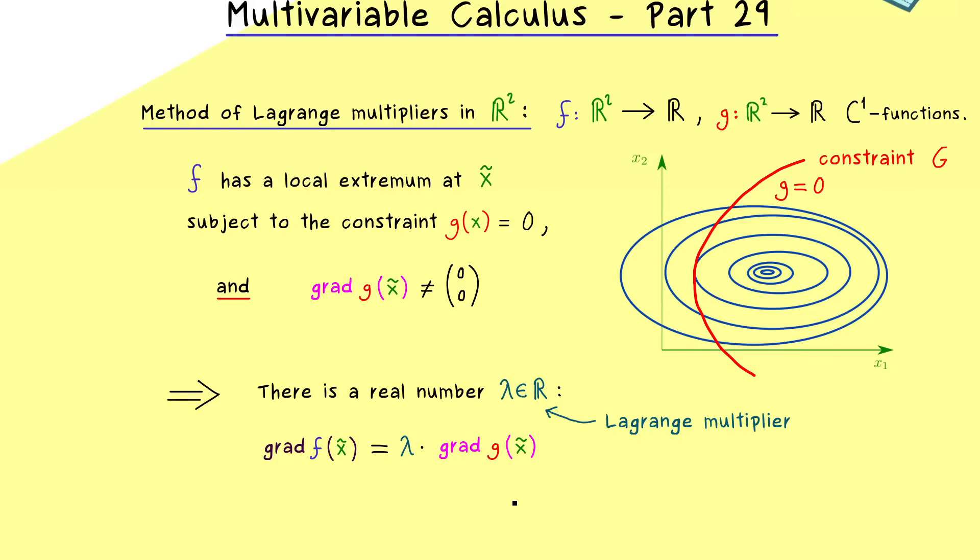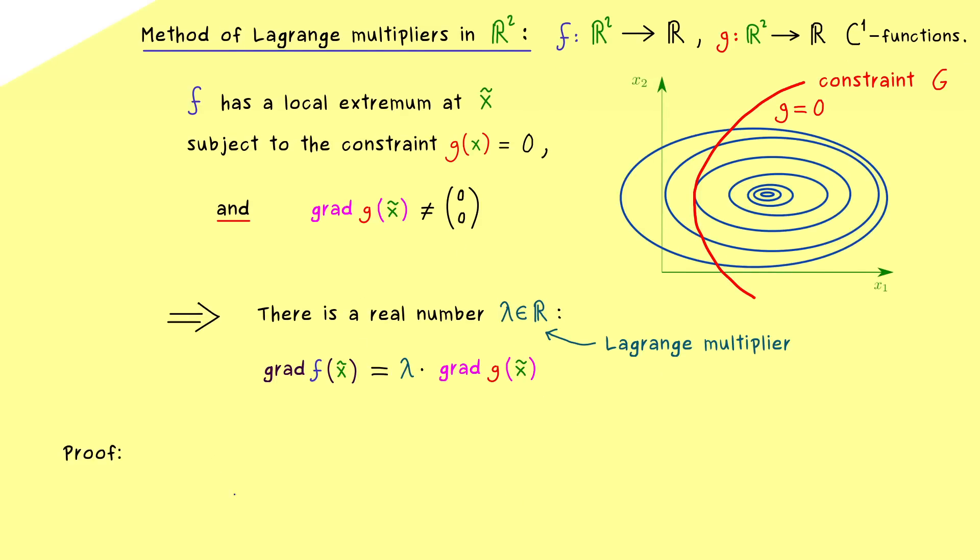Hence at this point x tilde we find a real number λ which we call the Lagrange multiplier. Then the only difference between the two gradients is this scalar λ. This is the theorem we want to prove now, and we will see that we just need the implicit function theorem for it.